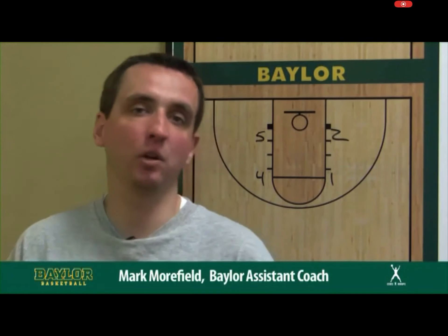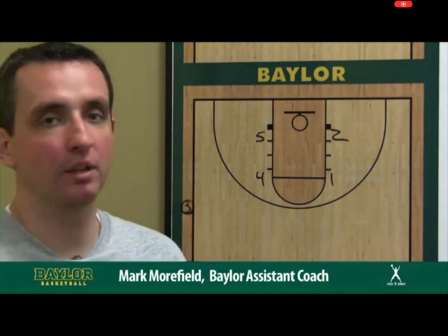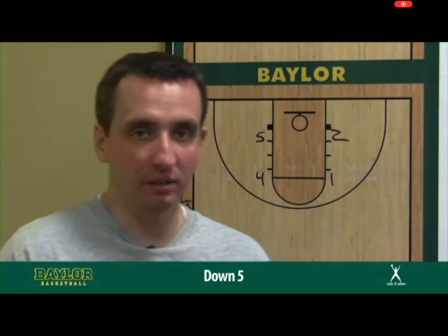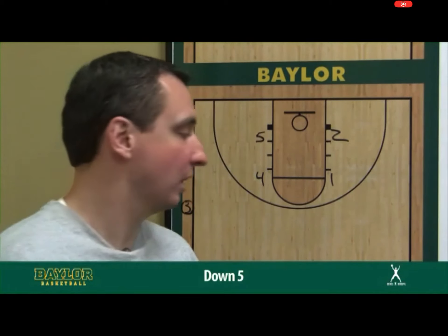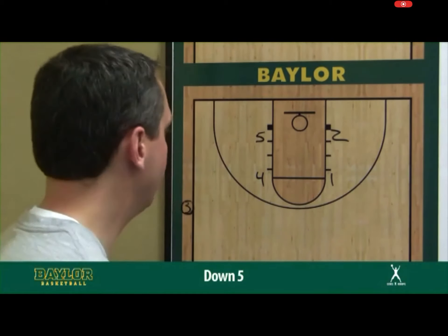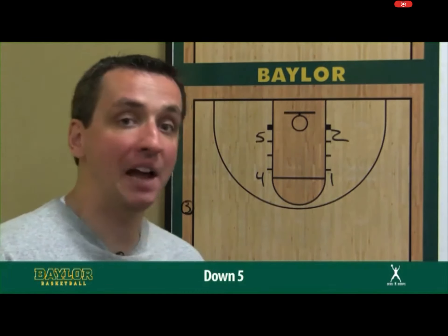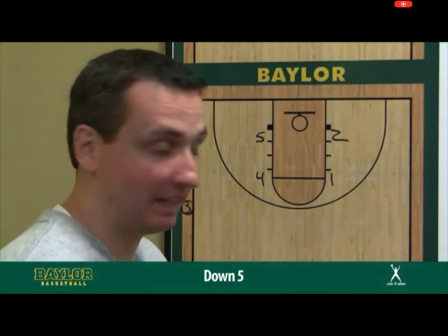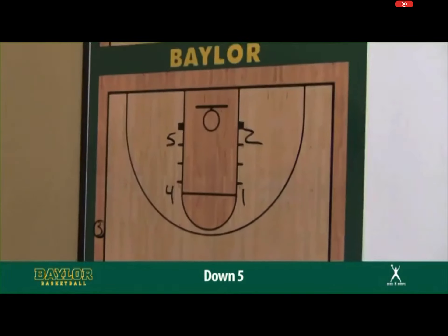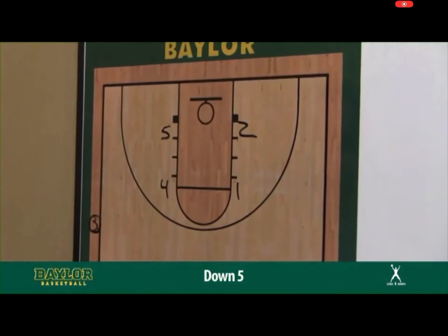Our next segment, I'd like to go over some sideline out-of-bounds plays in certain situations. We're going to go over five different situations and different things that we look to score for. Our first one is a situation where we're down five with about 26 seconds to play in the game. We've got a sideline out-of-bounds.